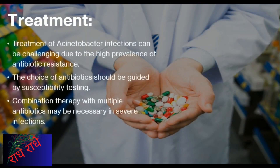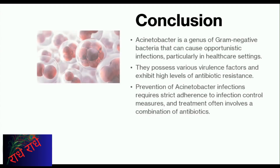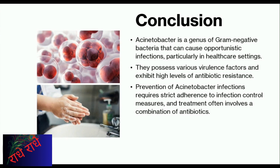Treatment of Acinetobacter infections can be tricky as the bacteria are known to be resistant to most antibiotics. Therefore, it is important to decide on the most efficient antibiotic based on susceptibility testing results. In particularly severe cases, a combination of antibiotics may be the better option. Acinetobacter is a genus of gram-negative bacteria that can cause opportunistic infections, particularly in healthcare settings. Known for their virulence factors and antibiotic resistance, prevention of Acinetobacter infections requires strict adherence to proper infection control measures. Treatment of these infections typically involves a combination of antibiotics.